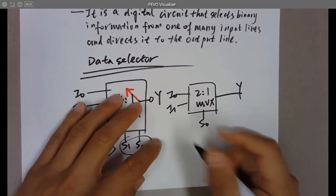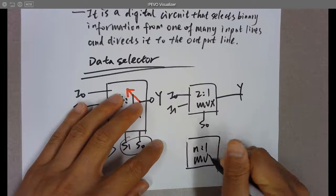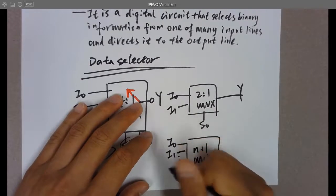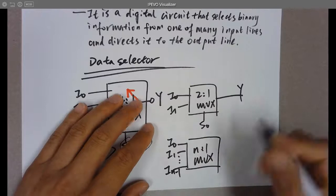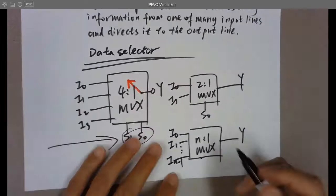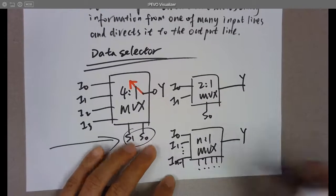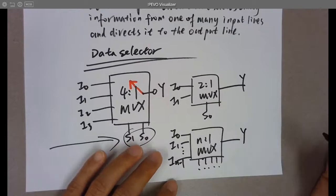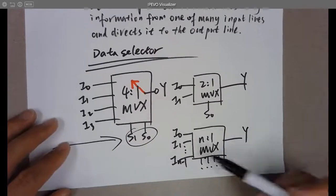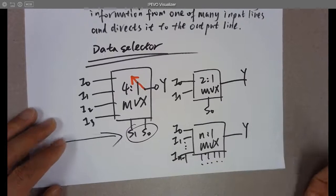You can also have an N-to-1 MUX with inputs I0, I1, through I(N-1), and output Y. The number of selection bits needed depends on N — enough bits to be able to pick up all input options.